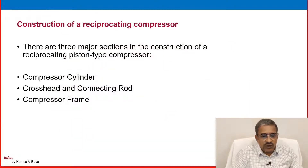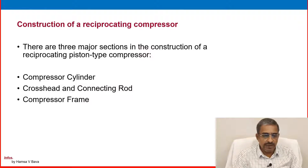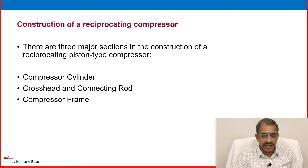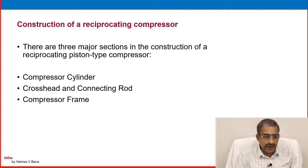Construction of a reciprocating positive displacement compressor. There are three major sections in the construction of a reciprocating piston type compressor: the compressor cylinder, the cross head and connecting rod, and the compressor frame.